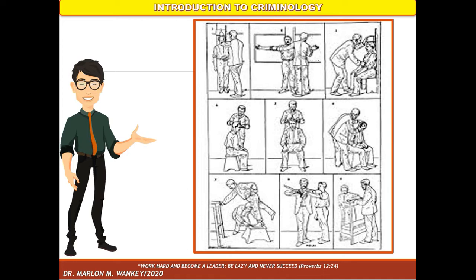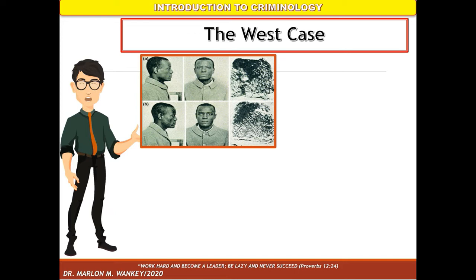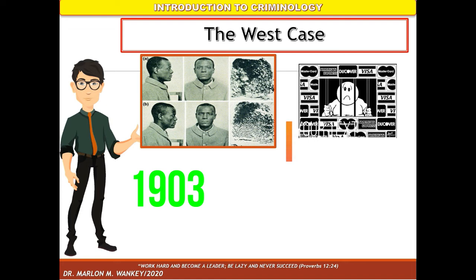However, this method of identification became inaccurate because there was one case showing two different persons with almost the same measurements. This is the West case — the mug shots and fingerprints of Will and William West. In 1903, newly convicted criminal Will West was taken to the Leavenworth Penitentiary for Bertillon measurements. The record keeper thought he was another registered inmate, leading to the realization of a major flaw in anthropometry.